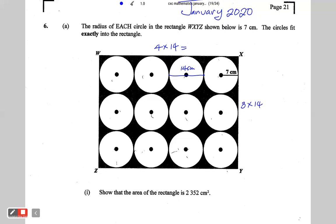Four by 14 is 56 centimeters, and three by 14 is 42 centimeters. So the length of the rectangle is 56 centimeters and the width is 42.